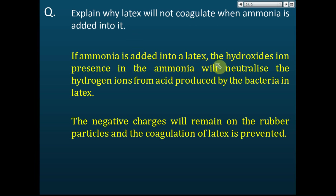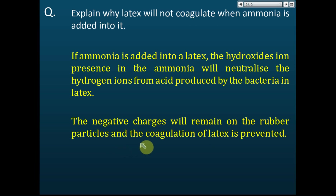If ammonia is added into latex, the hydroxide ions in the ammonia neutralize the hydrogen ions from the acid produced by bacteria. After the acid is neutralized, it cannot neutralize the charge on the membrane. The negative charges remain on the rubber particles and coagulation of latex is prevented. So acid causes coagulation of latex, while alkali such as ammonia prevents coagulation.